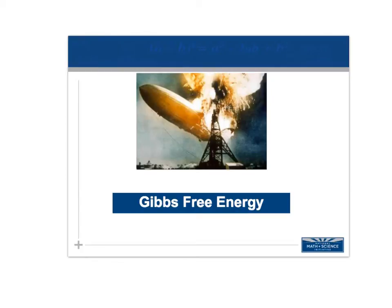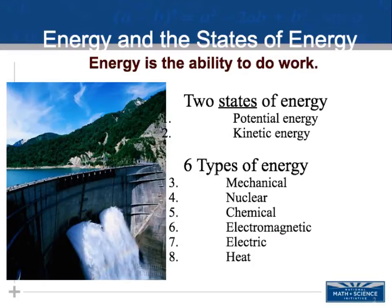Today we're going to talk about Gibbs free energy, which is basically the energy available to do work. We're going to talk about the components of that and what goes into it, and then we'll calculate it in class. Energy is the ability to do work, and we're going to talk about the two different states of energy as well as the types of energy.